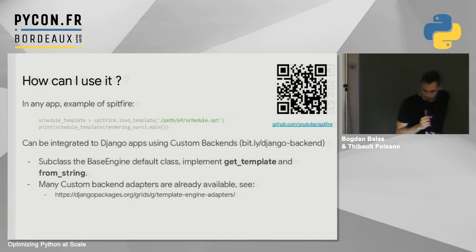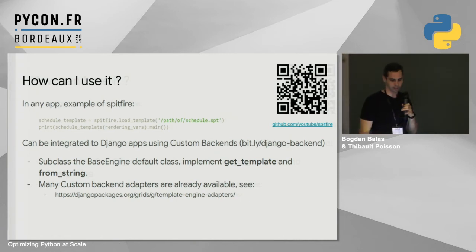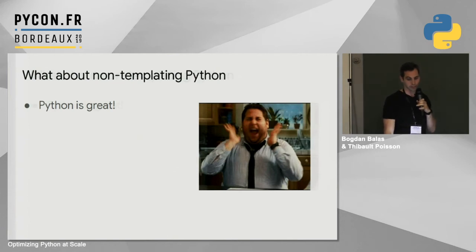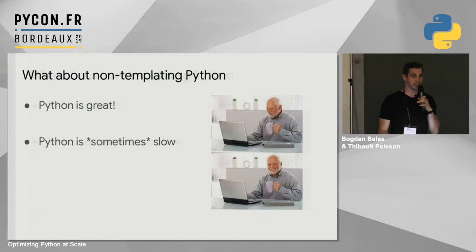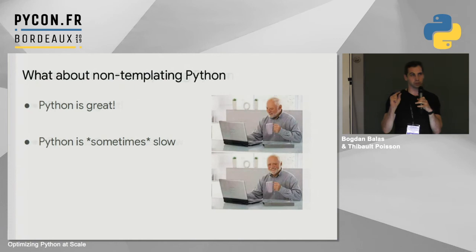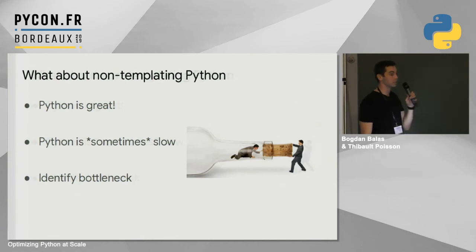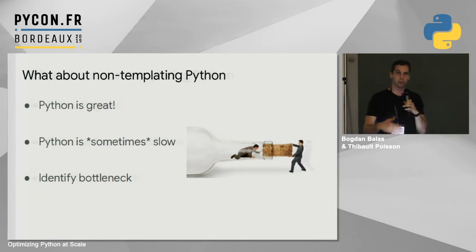Now we're going to talk about not templating. A lot of us use Python because it's fun and it's a great developer experience. But sometimes Python gets a little slow, especially when you're doing heavy computational work or tackling the small critical pieces of your service that can get a bit heavy — lots of tree traversals, mapping, some really complex data mutation.